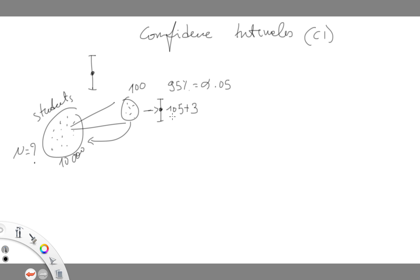So it could be 106, 107, or 108, or it could be 102, 103, or 104. It could be anywhere between these boundaries. So a confidence interval represents and gives us a range of plausible values for the true population average.